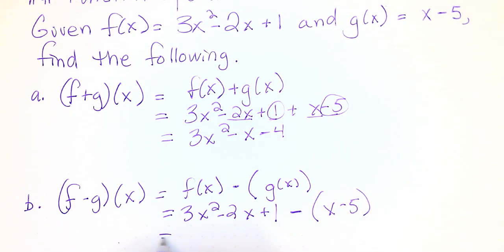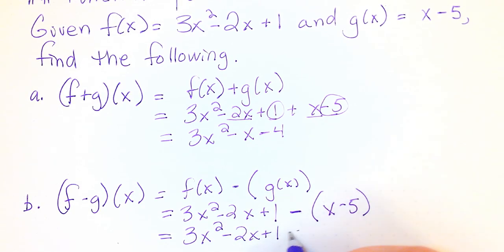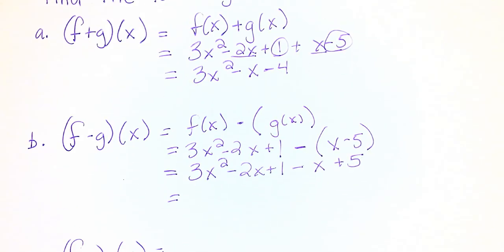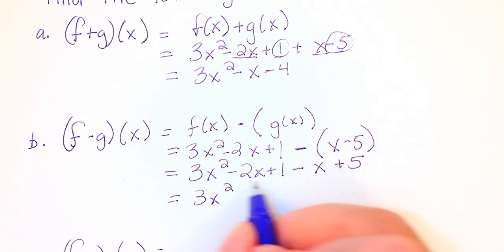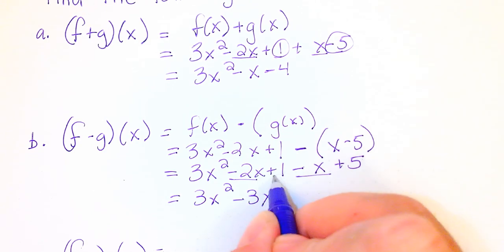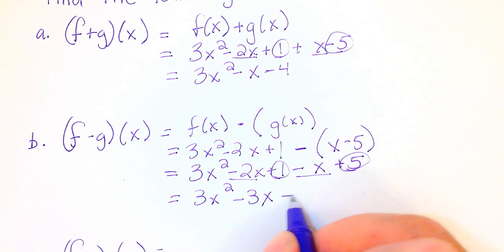Now we're going to distribute that negative sign. I have 3x² - 2x + 1 - x + 5 and then we're going to add like terms. This is going to be 3x² - 2x - x is -3x and 1 + 5 is +6. And that would be our (f - g)(x).